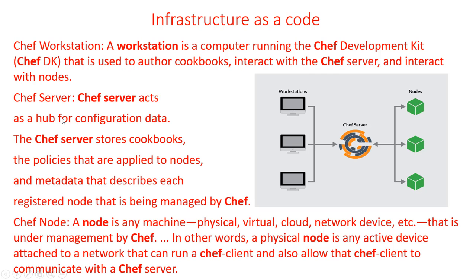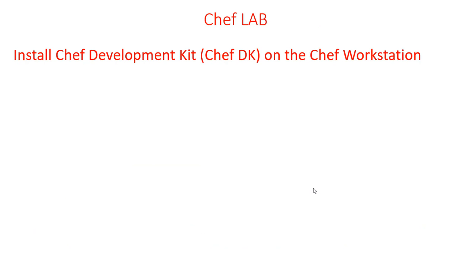The Chef Server acts as a hub for configuration data. It stores cookbooks, the policies that apply to the nodes, and metadata about the nodes — what's on each node. That's why it knows what needs to be applied and what needs to be updated, because it keeps information about all nodes in the central repository.